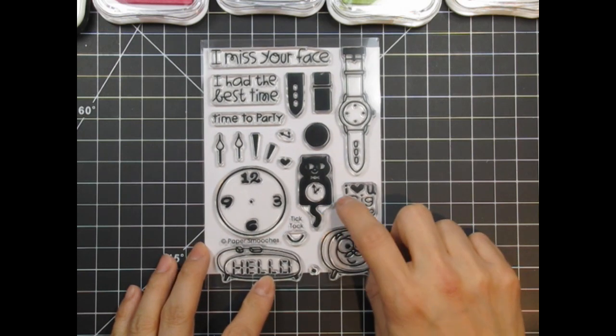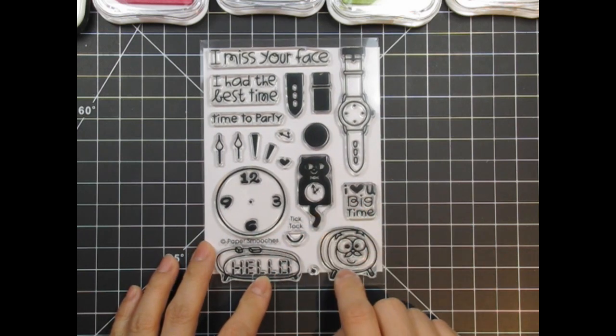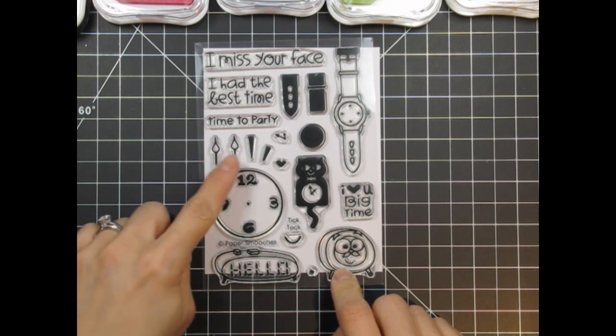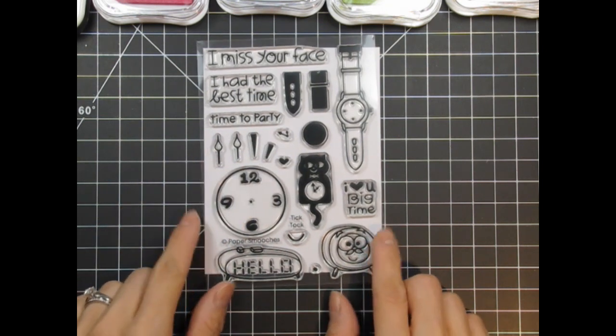There's a retro style alarm clock. I also love the adorable cat clock with the swinging tail. There's the big wall clock with two types of arms for you to choose from.